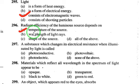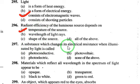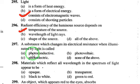A substance which changes its electrical resistance when illuminated by light is called a photoconductive material.